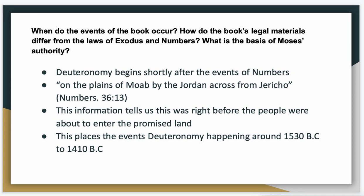How do the book's legal materials differ from the laws of Exodus and Numbers, and what is the basis of Moses' authority? We can infer that Deuteronomy begins shortly after the events of Numbers, just based off readings and location of where the book starts off. It says on the plains of Moab, by the Jordan, across from Jericho, in Numbers 36:13. This is telling us that this was right before the people were about to enter the Promised Land.